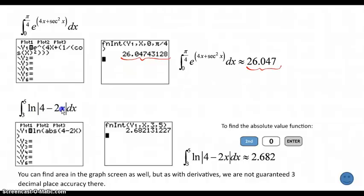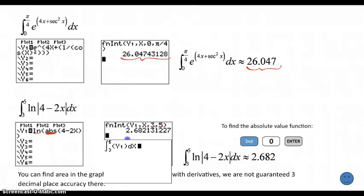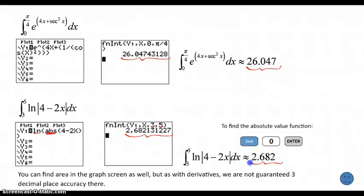And for that natural log function, and we remember natural log, and then you hit the catalog, right? And just hit enter, and that will put absolute value there for you. And so we're integrating that over the interval from three to five, and this should be the answer that you get. And there we are, accurate to three decimal places.